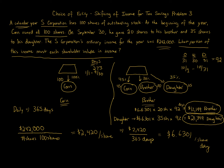As a shortcut for Corn's amount, you can add brother's $12,199 plus daughter's $21,349, then subtract that sum from $242,000. Since Corn is the only remaining owner, that gives you Corn's amount of $208,451. Note that due to rounding to the nearest dollar, the three amounts may be off by a dollar or two when summed.